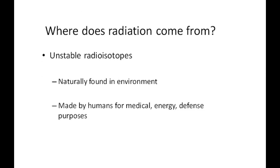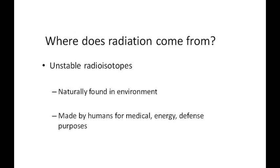You may wonder where radiation comes from. We just learned last time that there are unstable radioisotopes — isotopes that spontaneously undergo radioactivity. There's something about the neutron-to-proton ratio, and if the neutron-to-proton ratio isn't quite right, those isotopes will spontaneously undergo radioactive decay.